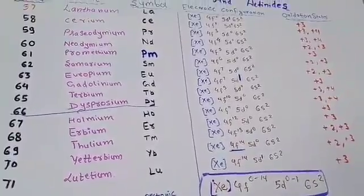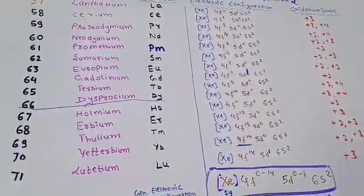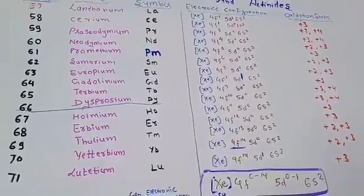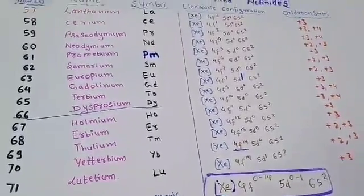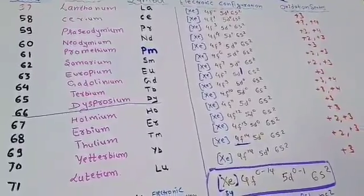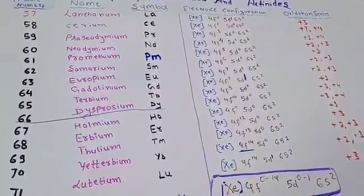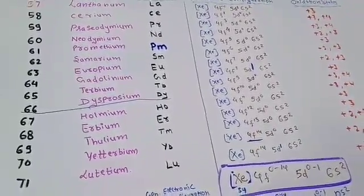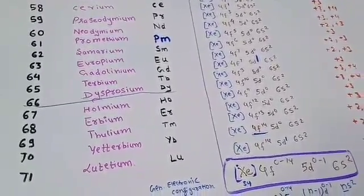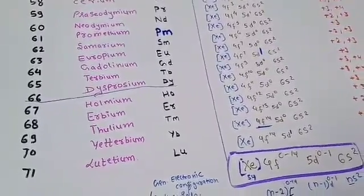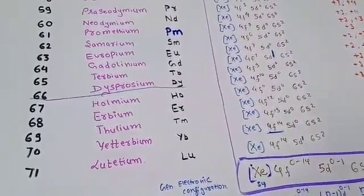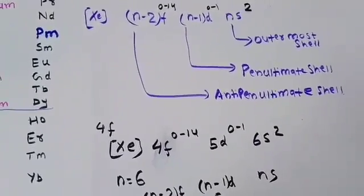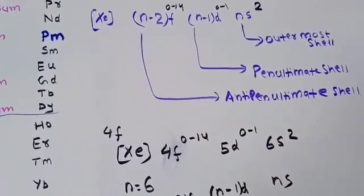And 71 is lutetium, symbol Lu. So learn all these elements very nicely — you can take a screenshot. You will get the general electronic configuration as well as oxidation states. Learn them by heart and write in your notes. These are the elements: lanthanum, cerium, praseodymium, neodymium, promethium, samarium, europium, gadolinium, terbium, dysprosium, holmium, erbium, thulium, ytterbium, and lutetium.